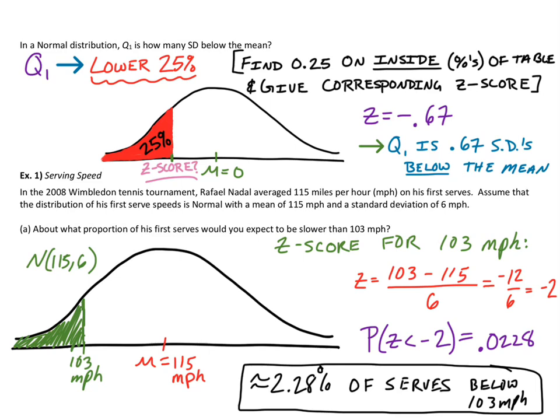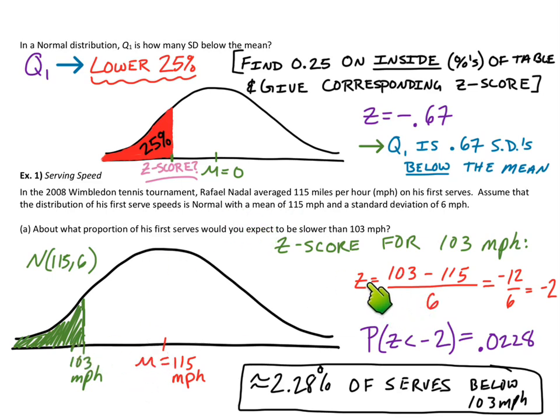That's really the gist: we can take this real-world applicable problem and, as long as it's a normal distribution, convert those boundaries to z-scores and look up those z-score values on our chart.